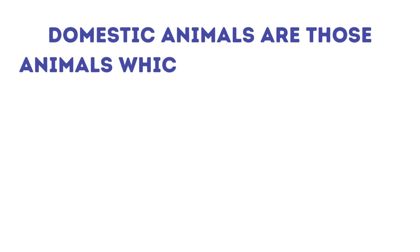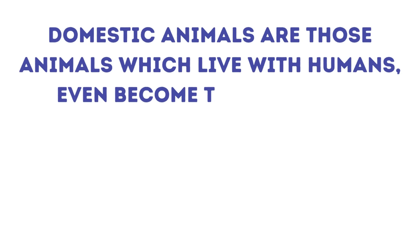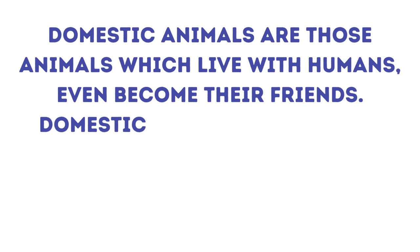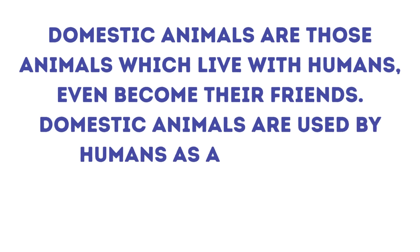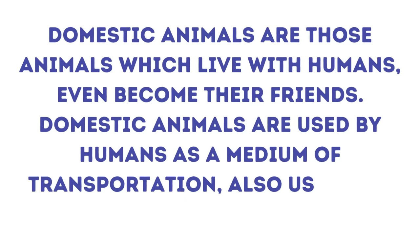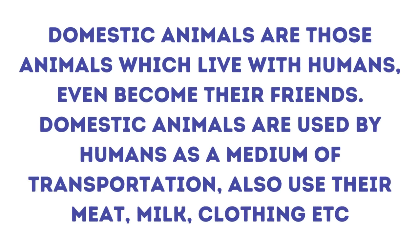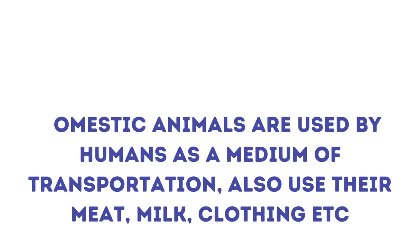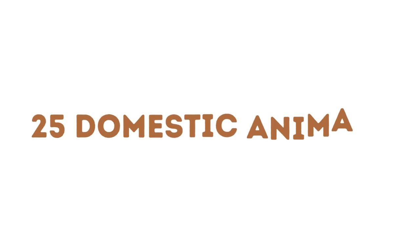Domestic animals are those animals which live with the humans and even become their friends. Domestic animals are used by humans as a medium of their transportation and also for meat, milk, clothing, etc. Now, let us see 25 domestic animals, their names and their pictures.